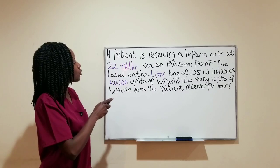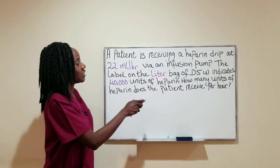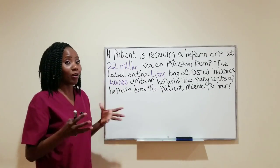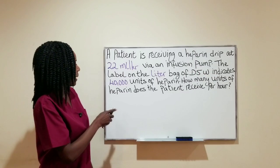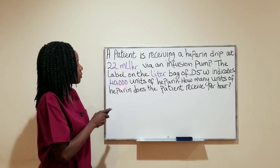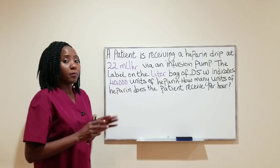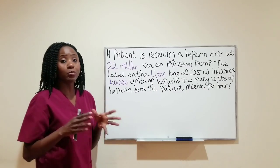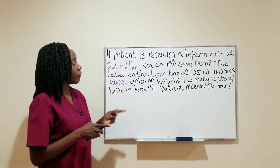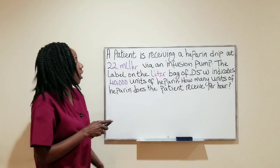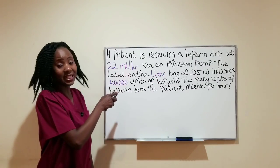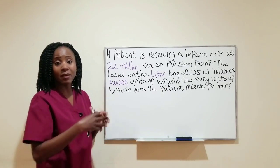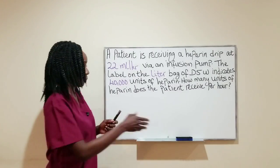We have 22 milliliters per hour. We have a liter bag of D5W — that is how heparin is infused — and that liter bag contains 40,000 units of heparin. Before I set up my equation, and for this question we're going to use the ratio and proportion method, I'm going to convert my liter to milliliters so that I have all my units of measurement in the same unit and when I'm ready to calculate, I don't have a problem.